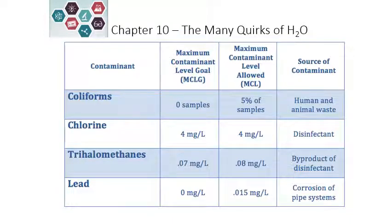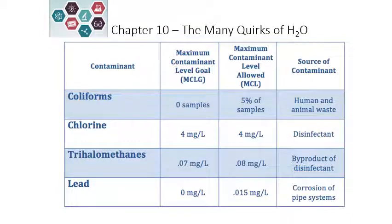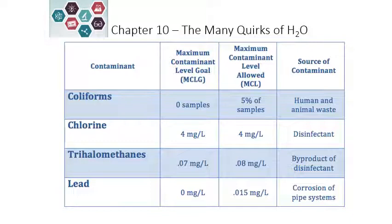For chlorine, the goal and the allowed level are the same — 4 mg per liter, which is another way of representing parts per million. So 4 parts per million is both the goal and the allowed level. Chlorine is added to water as a disinfectant to prevent bacterial growth.